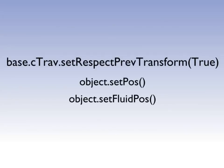To activate this, use base.cTrav.setRespectPrevTransform(true) and also instead of using object.setPos, use object.setFluidPos. Currently only collision sphere solid supports this feature, though other solids are less likely to give you this issue anyway.